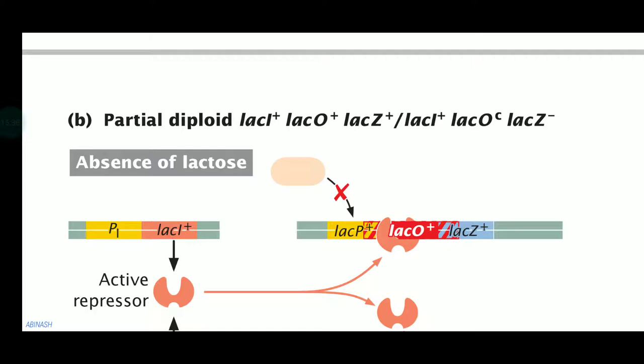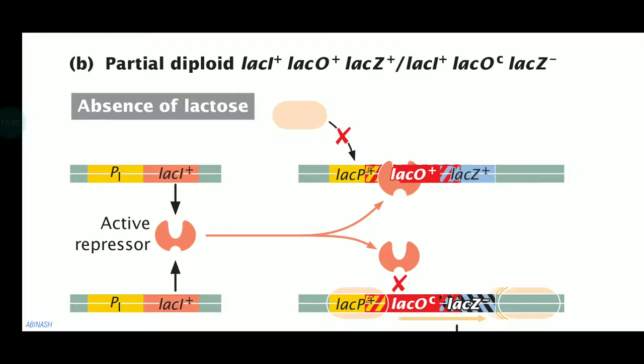In another condition, in the absence of lactose, the sequence is: lac I plus, lac O plus, lac Z plus in the bacterial chromosome, and lac Oc, lac Z minus in the plasmid chromosome. The bacterial chromosome is normal, but the plasmid has two mutations: lac Oc complementary and lac Z minus. The lac Oc means the repressor cannot bind to the plasmid operator.